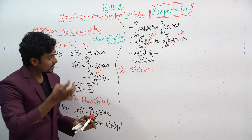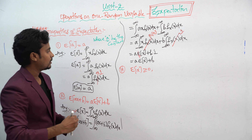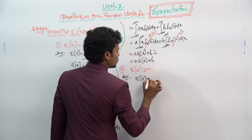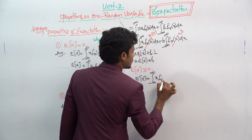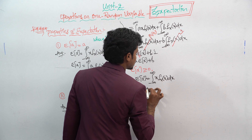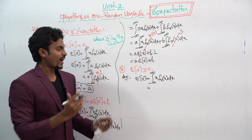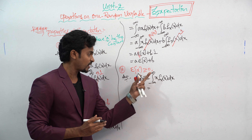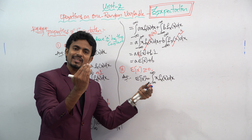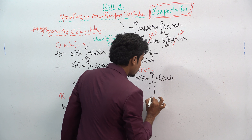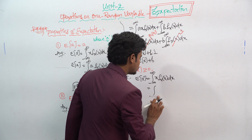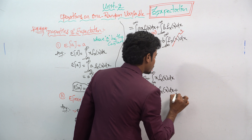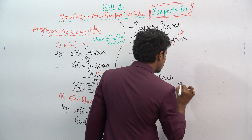Third property: E(x) ≥ 0. We have to check whether the expectation of x is greater than or equal to 0. You already know the formula for expectation of x: E(x) = integration from minus infinity to infinity of x times f(x) dx. We have to split this integral by parts.